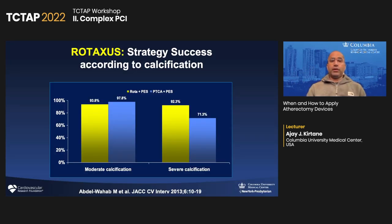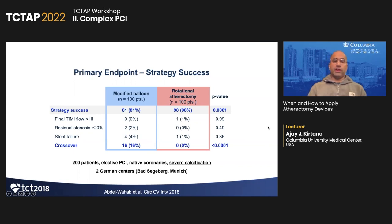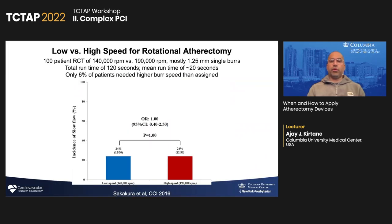Head-to-head trials of rotational atherectomy versus balloon alone have not shown much difference except in the subset of patients with severe calcification. From the Rotaxis trial, and similarly in the PREPARE CALC trial, there was a greater degree of strategy success going upfront with rotational atherectomy compared with a modified balloon-based strategy. However, another way of looking at this is that 80% of patients could be treated with a modified balloon or angiosculpt versus going straight to rotational atherectomy. The jury is still out — that's one reason we're conducting the Eclipse trial with orbital atherectomy.